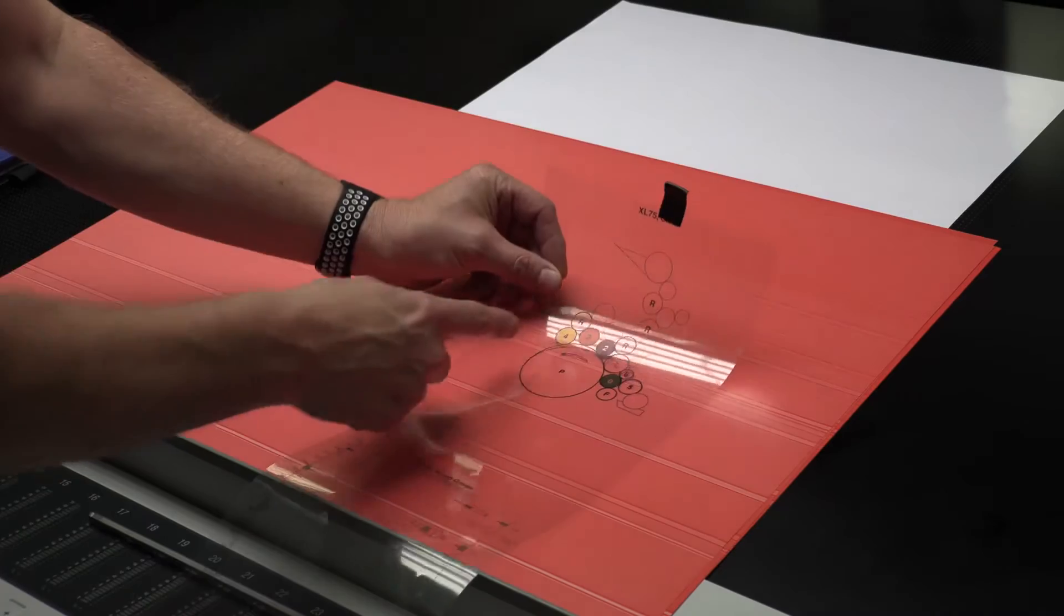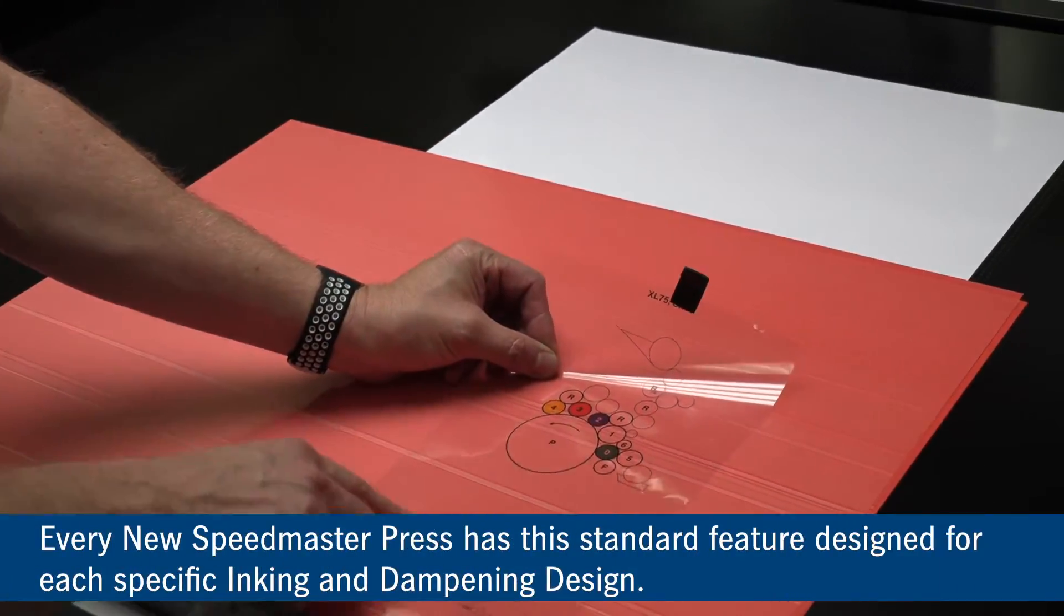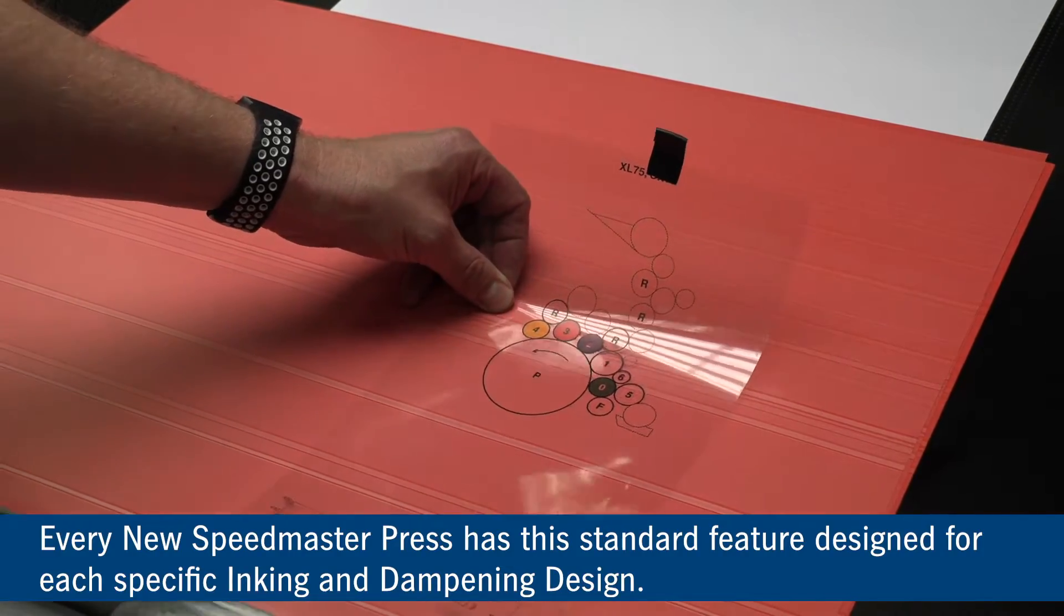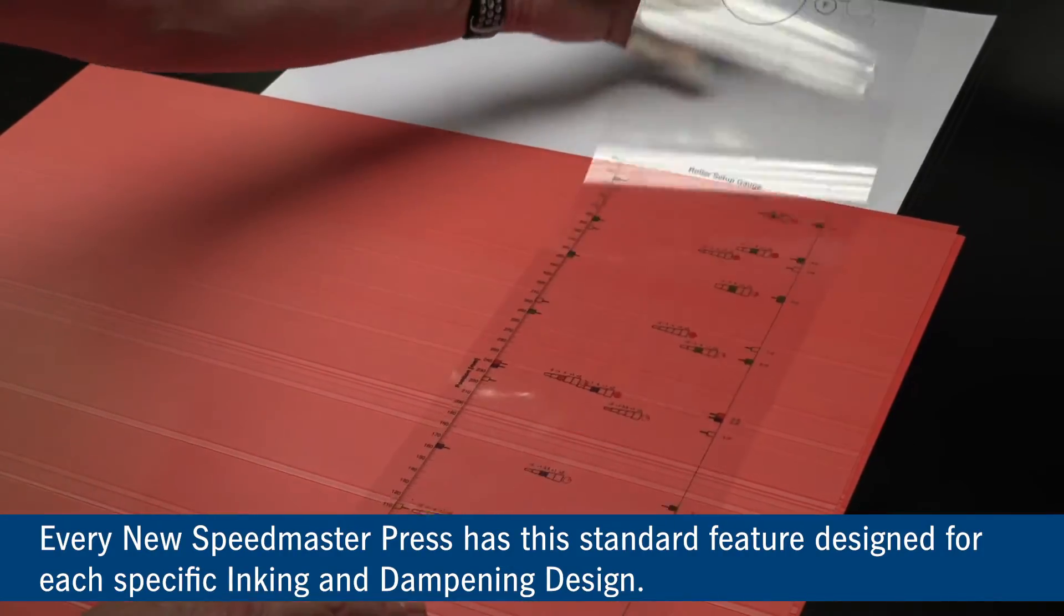As you can see from this mylar, everything is designated. The dampening system and the ink train system. Now the measurements and the increments that we need to move.